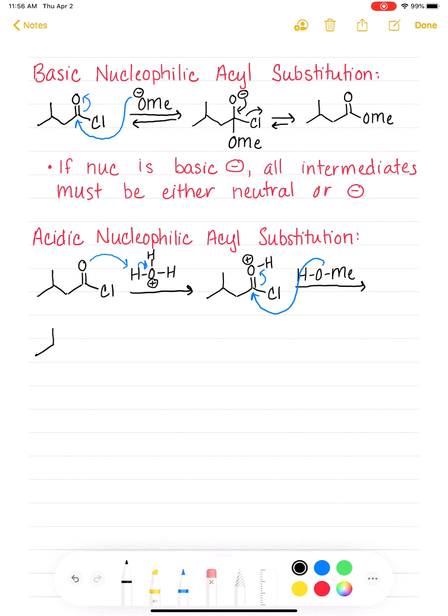And we're going to open up the carbon-oxygen double bond. So this will give us a molecule. Now we have four bonds to that carbonyl carbon. We have a positive charge on the O, the H-O-Me that we just added.